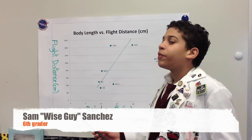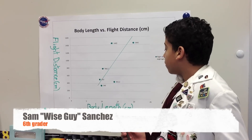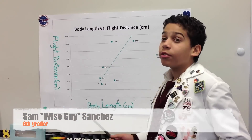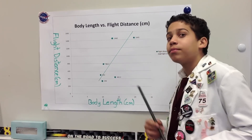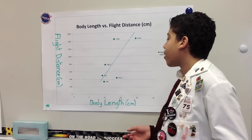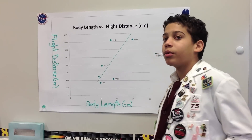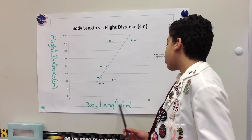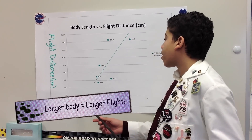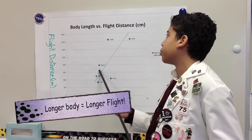After we recorded our data, we created a chart using Excel, and this is what we have. As you can see on this chart, when the body length increases, the farther the rocket will go.